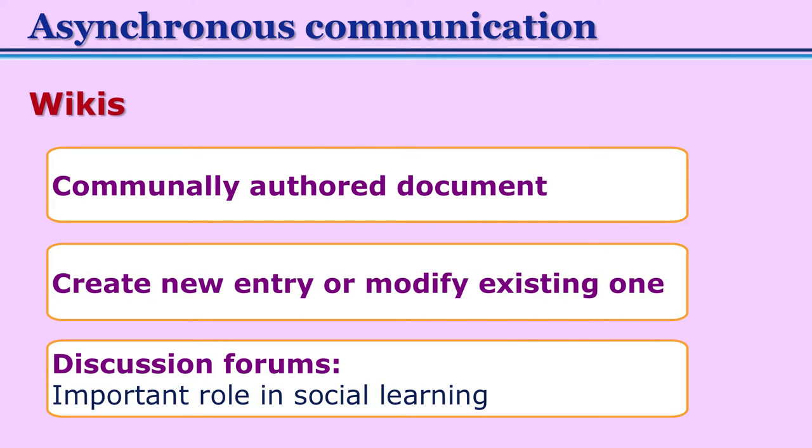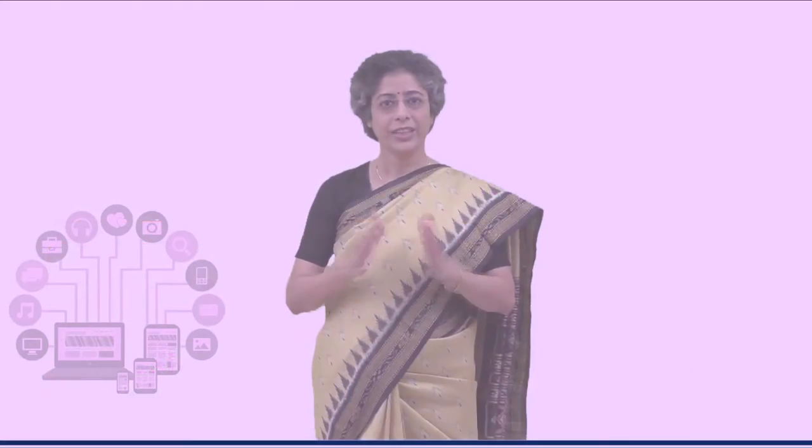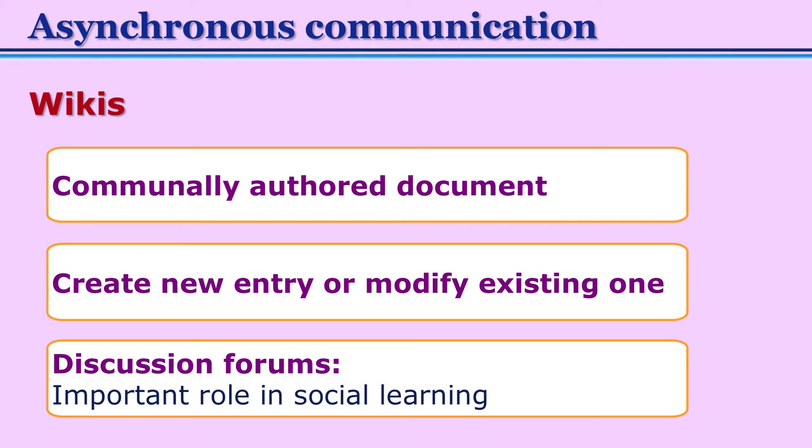Wikis are another asynchronous communication tool. Wikis are communally managed documents. We can create a wiki — it's kind of an online book but not written by one person, written by many. Wikis can have sections and we all can come together and write on those wikis. Content gets generated by a group of persons. We can read and edit our own content and also comment on someone else's content. Wiki is a fantastic tool where students can come together, interact, and create documents together. Wikis may also have built-in discussion forums.